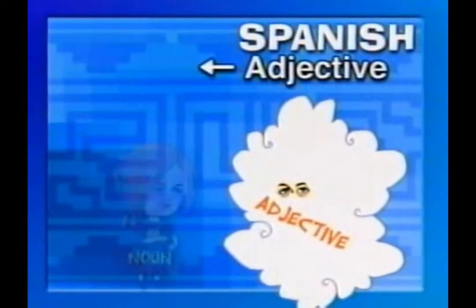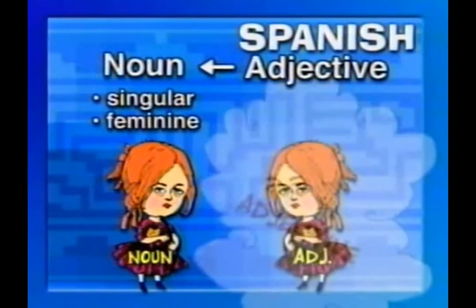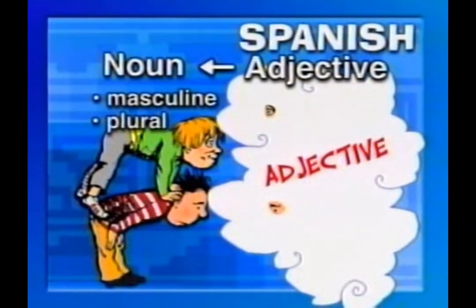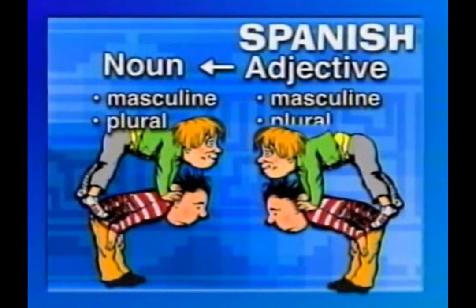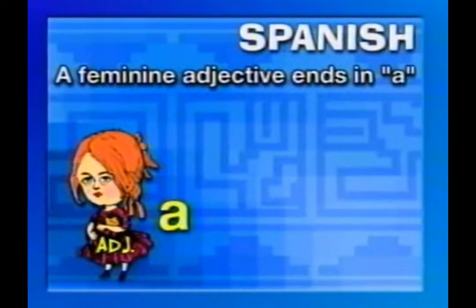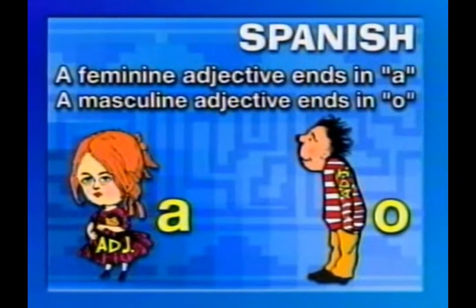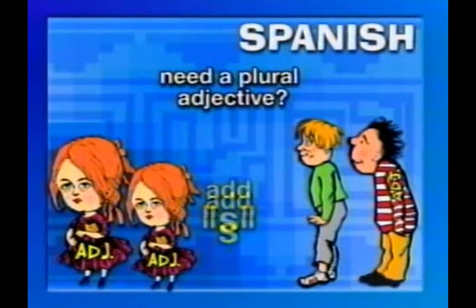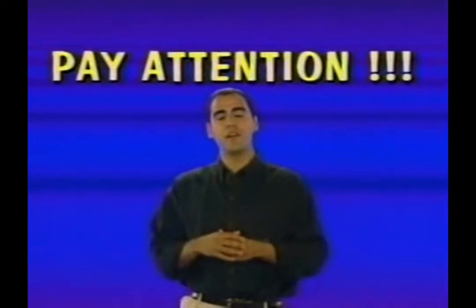Remember, it's essential that your adjectives agree in gender and number with the nouns they modify. If an adjective modifies a noun that's singular and feminine, the adjective must also be singular and feminine. If an adjective modifies a noun that's masculine and plural, the adjective must also be masculine and plural. A feminine adjective ends in -a and a masculine adjective ends in -o. This is generally true of the nouns they modify as well. If you need the adjective to be plural, just add an -s on the end. Pay close attention to the endings of the following adjectives.